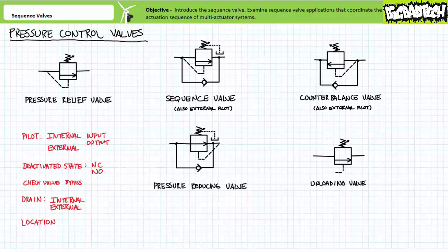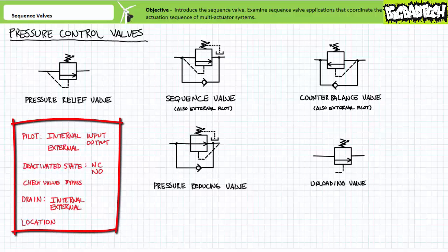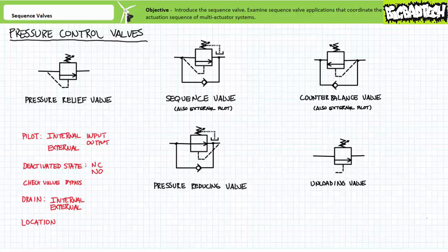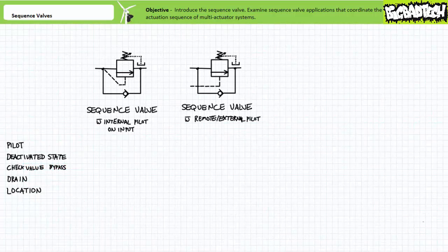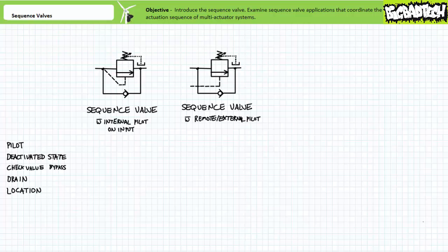Anytime one of the pressure control valve quintuplets pop up, you should be able to run through the list: pilot line, deactivated state, check valve bypass, drain, and location and perceived function, and check off as many identifiable characteristics as possible. Sooner or later, you'll hit upon which valve you're looking at. Let's see if we can classify the sequence valve, the topic of this particular lecture, using these characteristics.